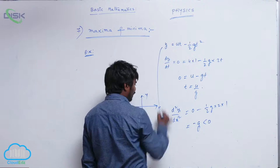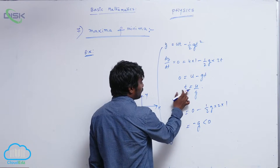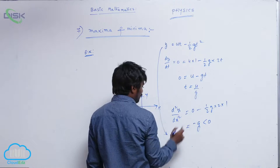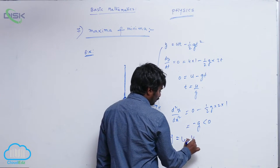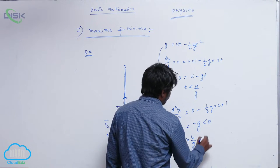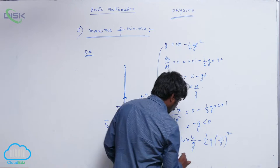Of y, using this function y, wherever t is present, you substitute u by g. So you will be getting maximum value: u into u by g minus half g into (u by g)² squared.